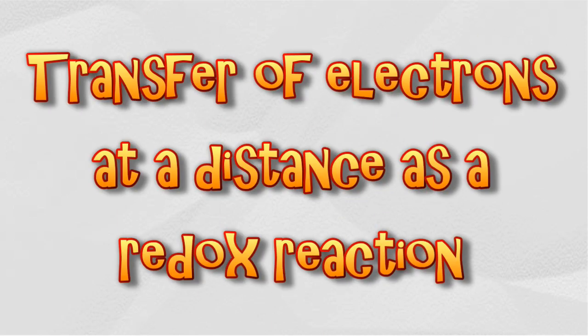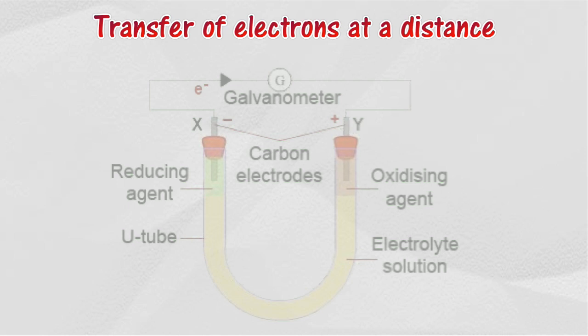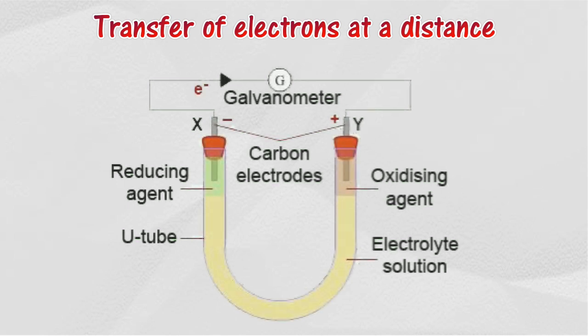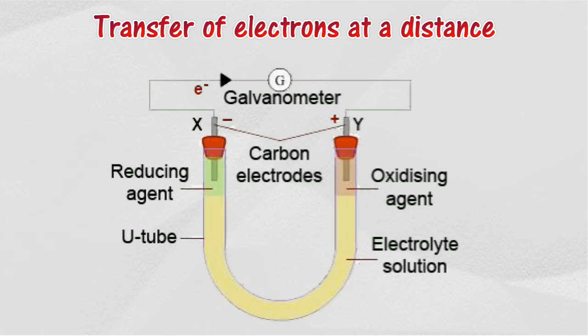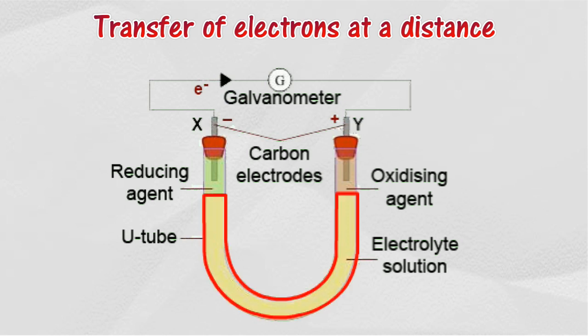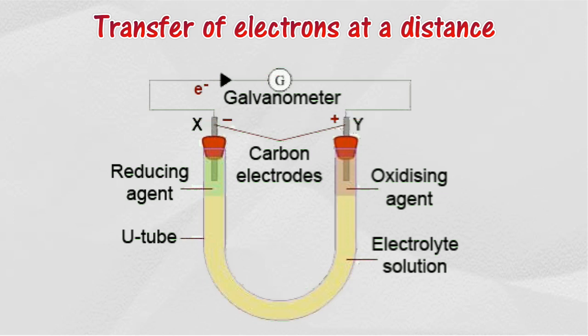Transfer of electrons at a distance is a redox reaction when oxidizing agent and reducing agent solutions are separated by an electrolyte. The redox reaction occurs by transfer of electrons using a connecting wire. The electrolyte acts as a salt bridge to separate the two solutions but allows ions to pass through to complete the circuit.